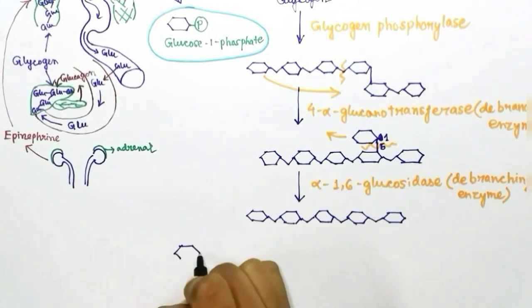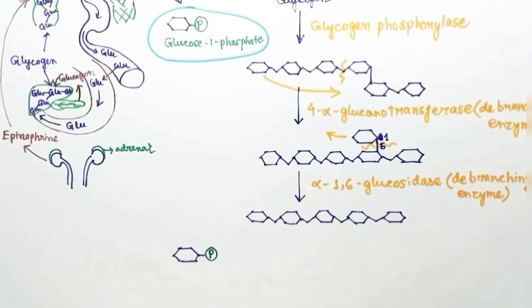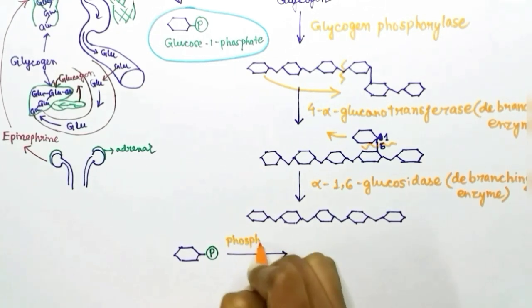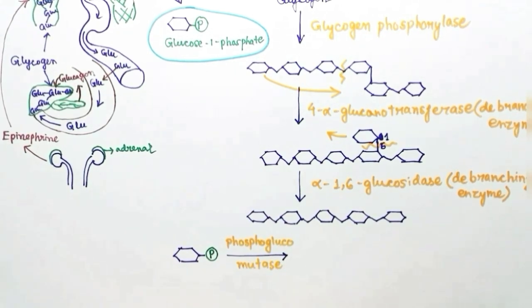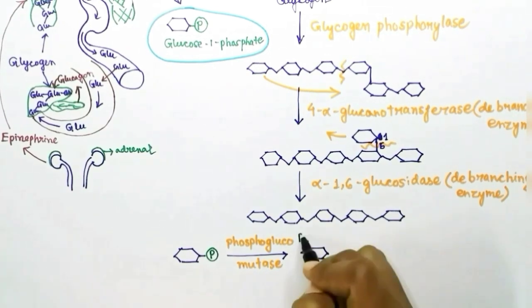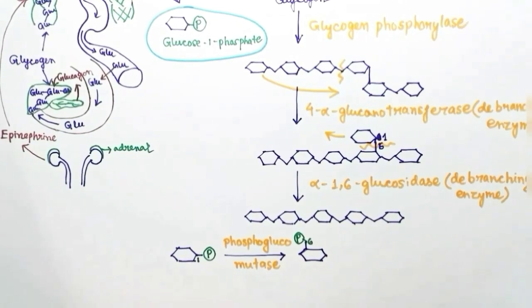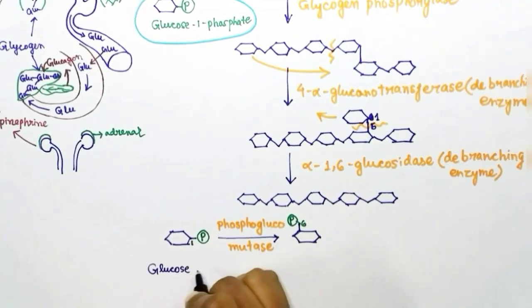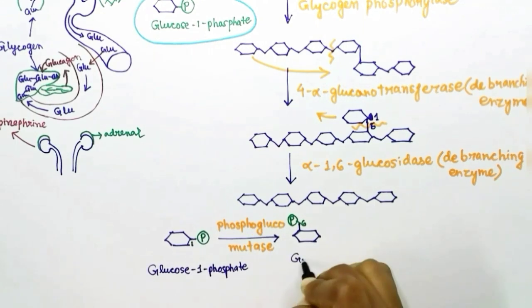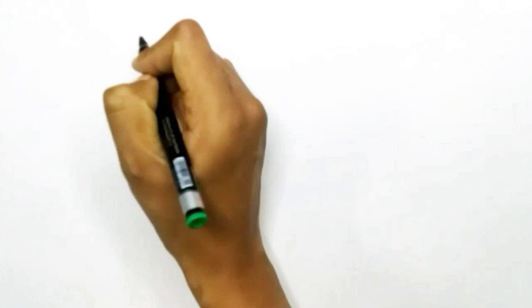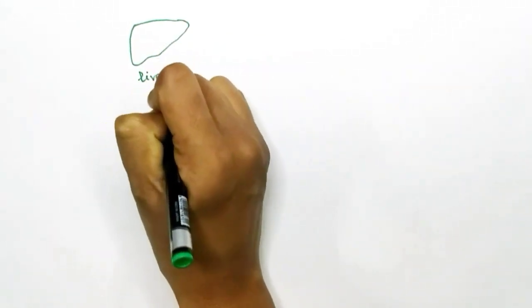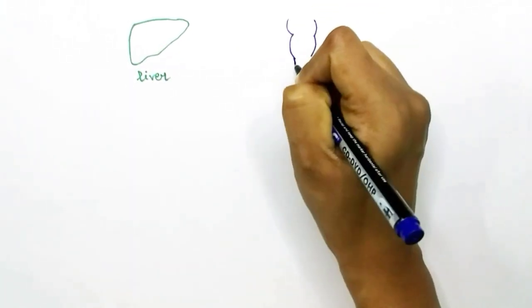After the branch is broken down, the linear chain of glycogen is further broken down into more glucose-1-phosphates. Glucose-1-phosphate is then converted to glucose-6-phosphate by the enzyme phosphoglucomutase, which transfers the phosphate group from the first carbon to the sixth carbon of glucose. This gives us glucose-6-phosphate at the end of glycogenolysis.